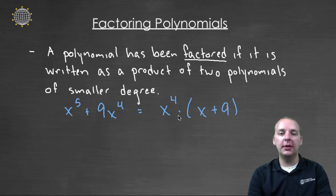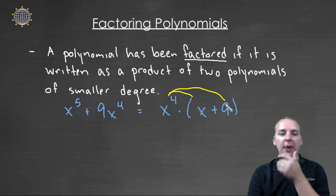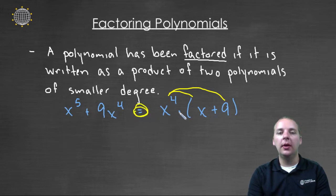I know this is correct because if I distribute the x to the fourth through the binomial x plus nine, you would get x to the fifth plus nine x to the fourth. So these are equal, and I just turned this polynomial into a product.